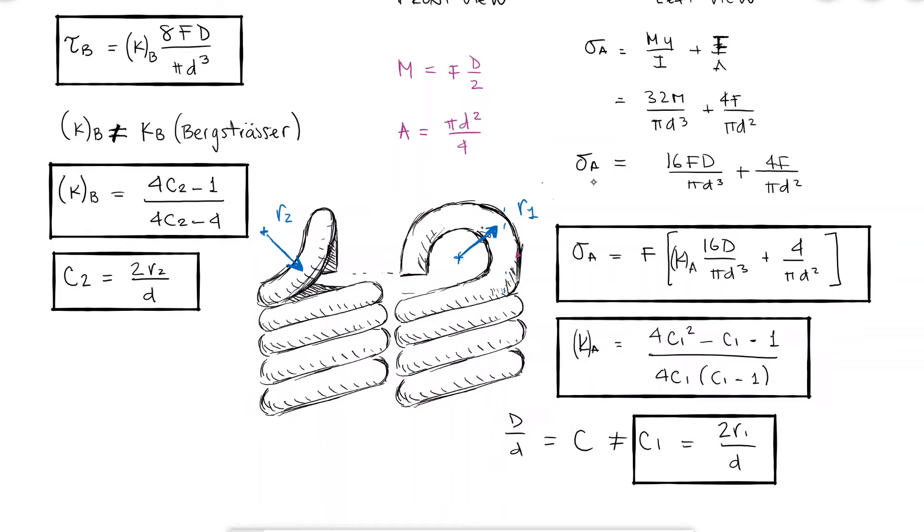You can imagine that for a sudden transition into the hook from the body of the extension spring R2 would be very small and so would C2 and therefore the correction factor would be large and so would the stress, and this is the reason there is usually a twist before the hook or loop, a more gradual transition from the body to the hook.